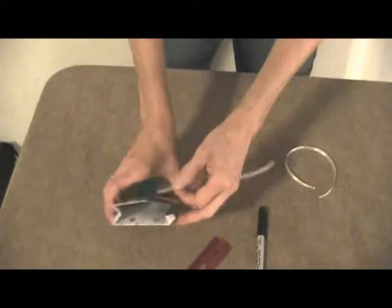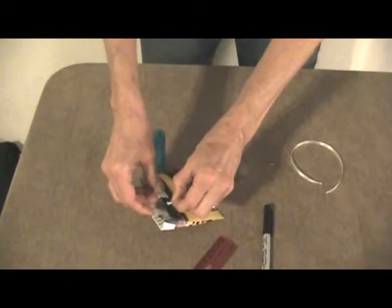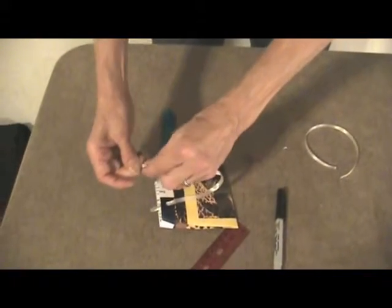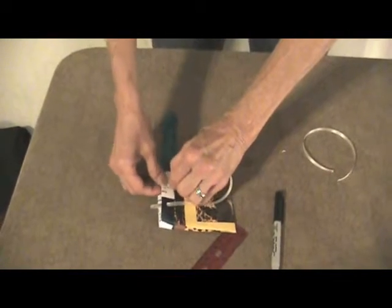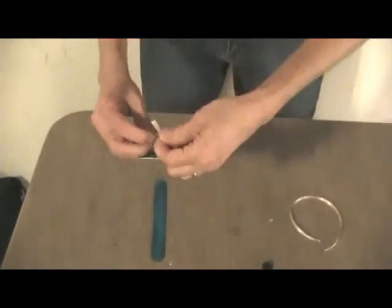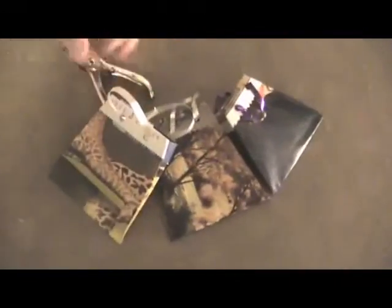And to finish it off, very simple. You're just going to string your ribbon or raffia, whatever you would like, through the holes. I like to do it from the outside to the inside so I can make my ties on the inside and they will not show. And tie it and it is ready to be used.